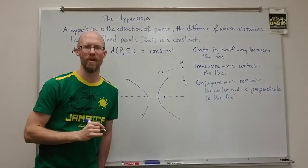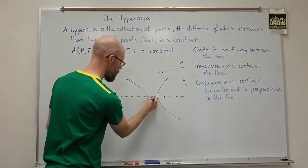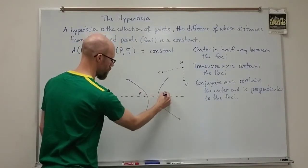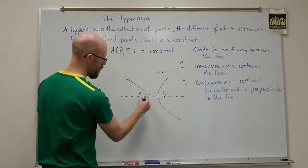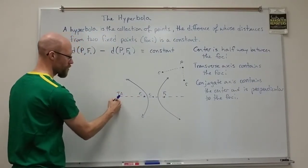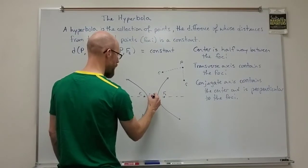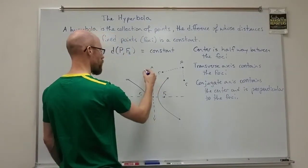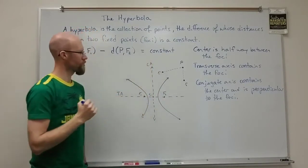So if the center C is here, with F1 and F2 on either side, the transverse axis — I'll call it TA — runs through the foci. The conjugate axis then runs vertically through the center, perpendicular to the transverse axis.